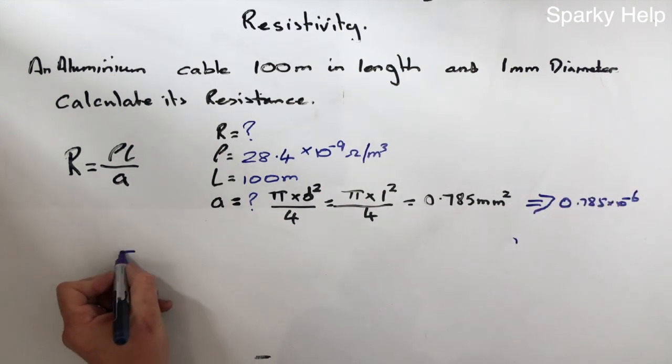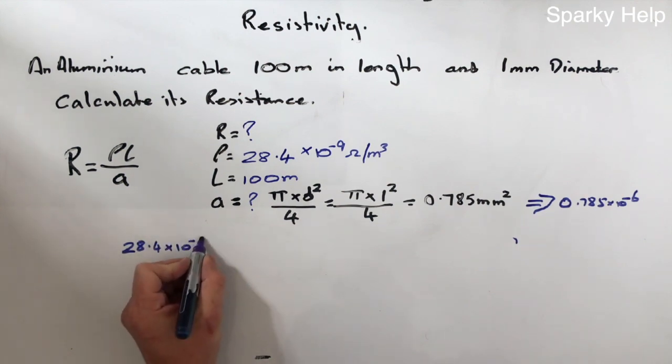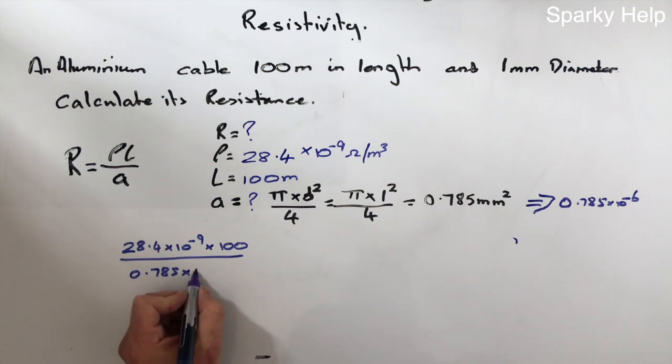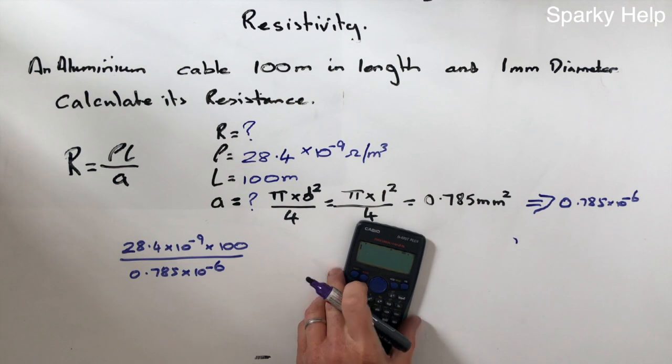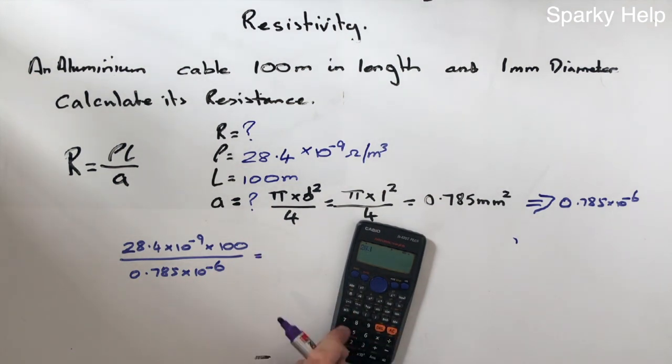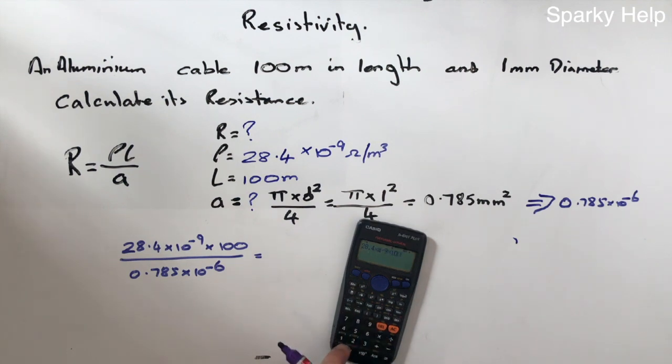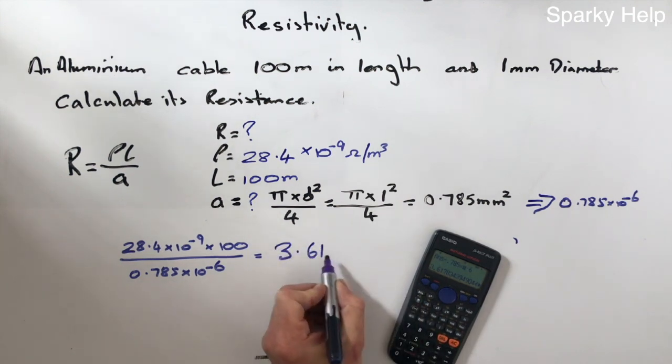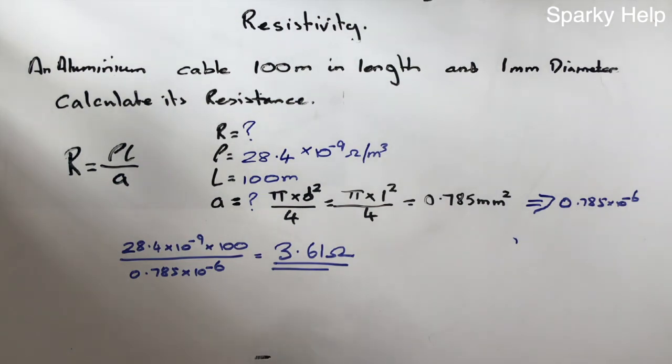So 100 meters of aluminum, 1mm diameter is 3.61 ohms.